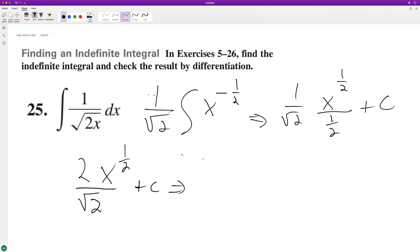It looks like because this 2 can be broken up into square root of 2, square root of 2 on the bottom, we're going to end up with square root of 2. And then x to the 1 half is the same thing as square root of x.